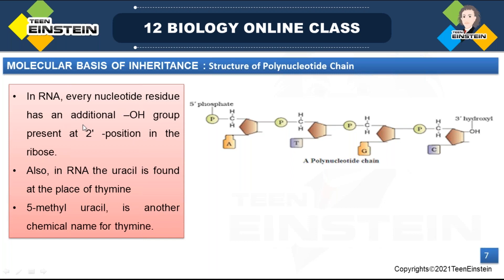In RNA, an additional OH group is present at the 2' position of every nucleotide residue. Also, uracil is present in RNA only. Thymine is 5-methyl uracil — that is the chemical name for thymine.